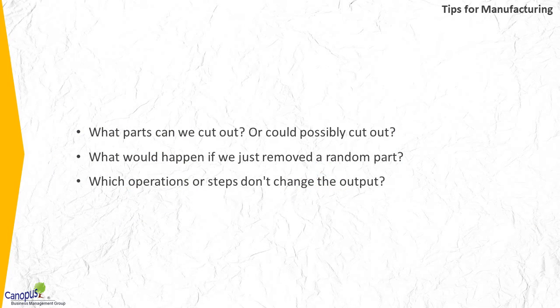Now let's talk about some tips relating to manufacturing. What parts can be cut out? What would happen if we removed any random part from an assembly? What operations or steps don't change the output?